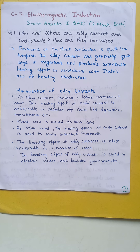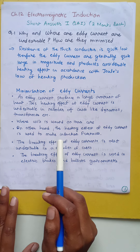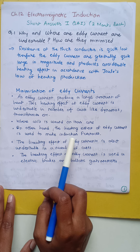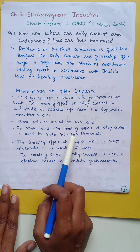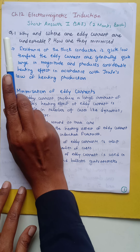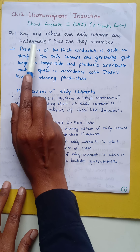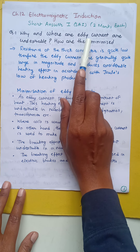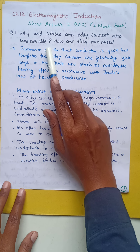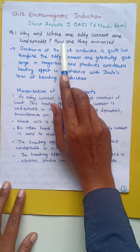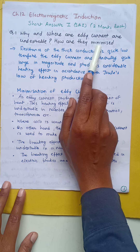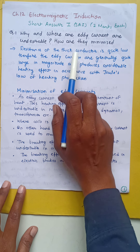Here we have another type of question that is short answer 1. This comes in section B for 2 marks each. Our first question is: why and where are eddy currents undesirable? How are they minimized? So what we know about eddy currents?